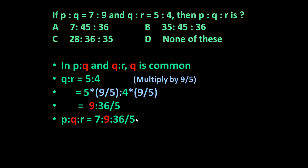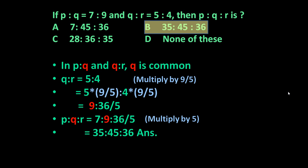Simply multiply this by 5. You will get P is to Q is to R is 35, 9 means 45, and 36 as it is. So this is the answer: 35 is to 45 is to 36.